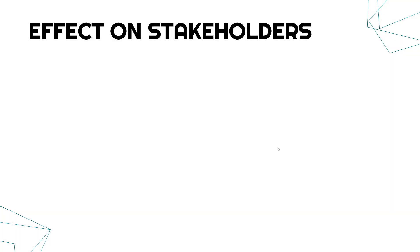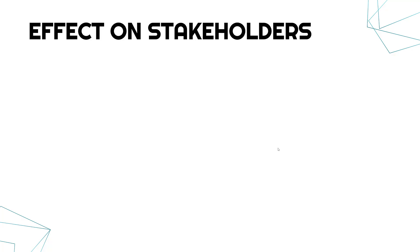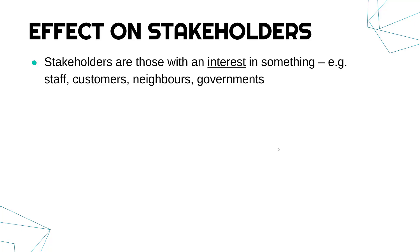Let's end by looking at the effect good and bad quality information can have on stakeholders. In an exam this will present itself based on a scenario — you have to think about what would be the consequence of information being biased, unreliable, invalid, or incomplete. Stakeholders are anyone with an interest in something — an interest in an individual or an organisation. So these might be staff, customers, neighbours, governments — anyone with either a positive or negative interest in what you are doing.